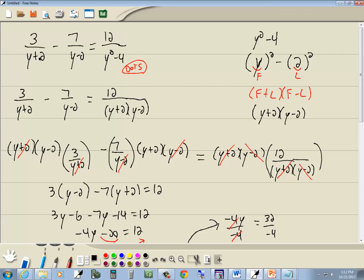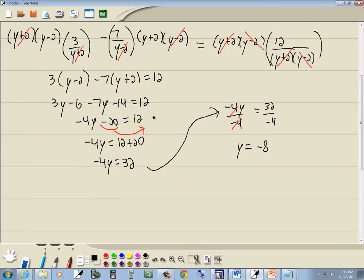Well, if I put negative 8 here, negative 8 plus 2 is negative 6. That's not 0. If I put negative 8 here, negative 8 minus 2 is negative 10. That's not 0. If I put negative 8 here, negative 8 squared is 64 minus 4. That's 60. That's not 0. So this checks. And y equals negative 8 is our answer.